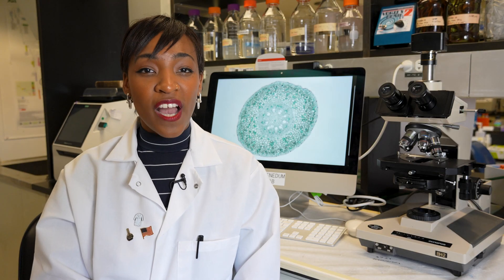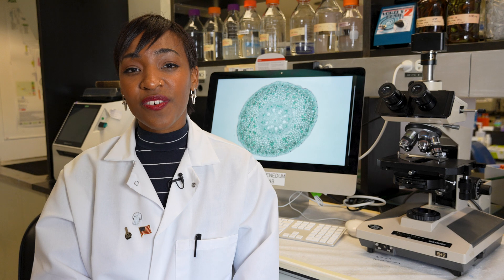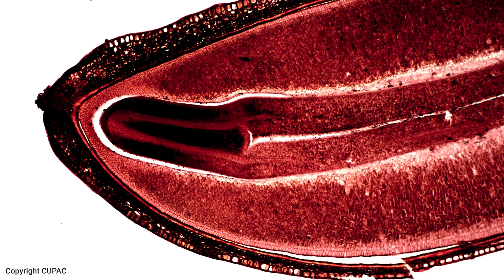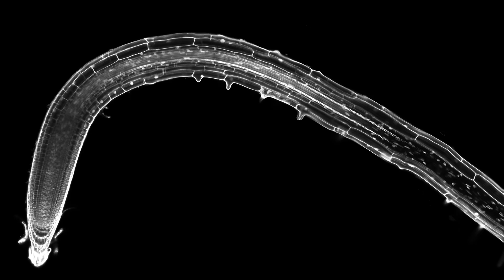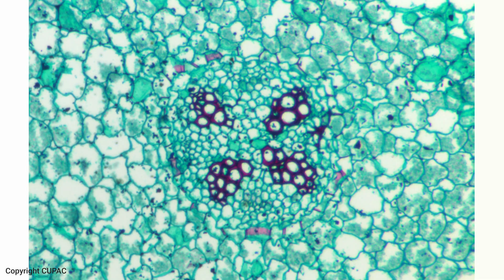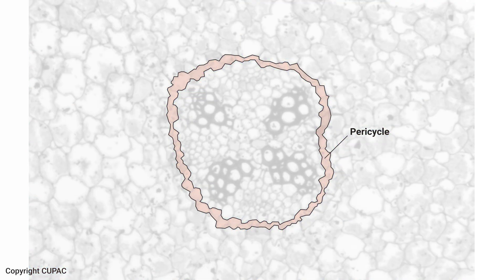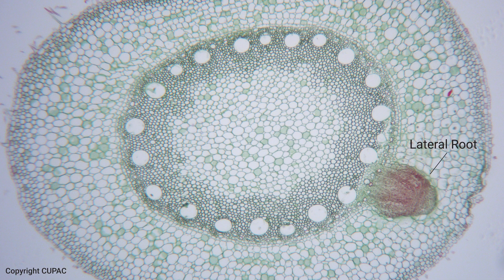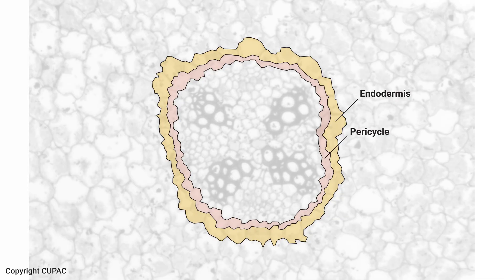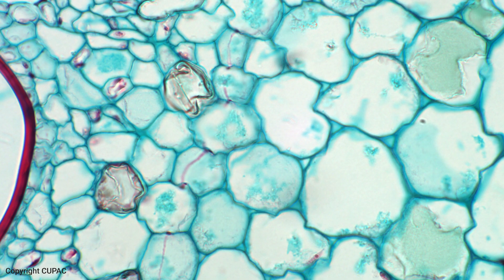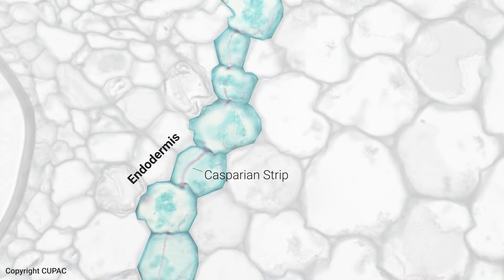Let's recap. Roots are vital structures in plants, providing anchorage and absorption. Root growth starts with the primary root, driven by the root apical meristem, the RAM, near the tip. Cells move through four developmental zones as they mature and differentiate. At the center of the root, you'll find a protostele, surrounded by the pericycle, which is crucial for forming lateral roots that enhance the root system's surface area and strength. And encasing it all is the endodermis, providing a filtration system for the entire plant.